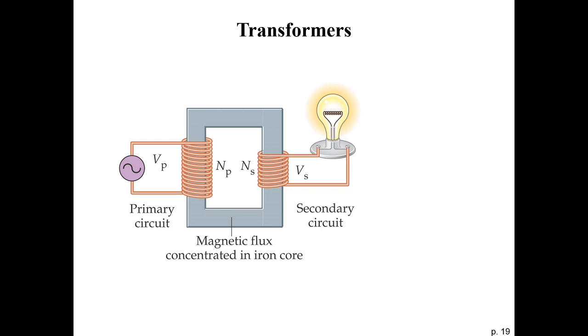To do that, we use something called a transformer. A transformer is pretty similar to the original device that Faraday built back when he was proving that changing magnetic fields produce electric currents.